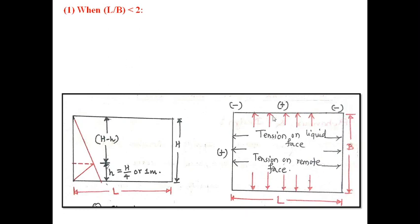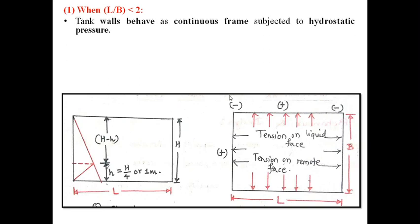Let us start with Case 1, that is when L/B is less than 2. The tank walls behave as a continuous frame subjected to hydrostatic pressure. This figure shows the plan view of the Rectangular Water Tank where L is the inside clear length and B is the inside clear width. In the elevation, L is the length and H is the height of the water tank. We know from fluid mechanics that the walls are subjected to a triangular pressure distribution diagram due to hydrostatic pressure.